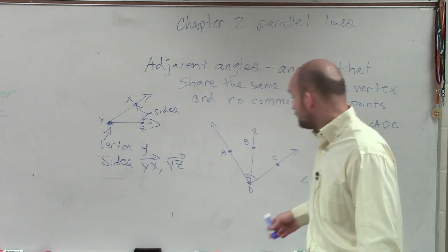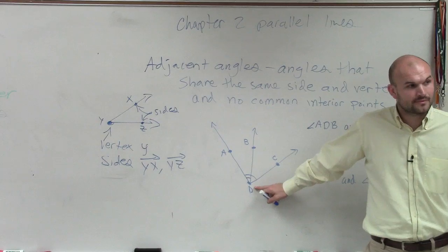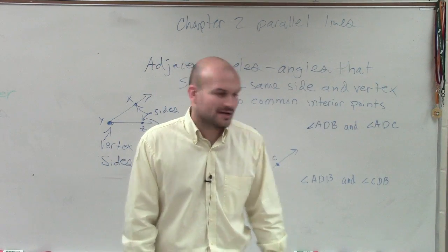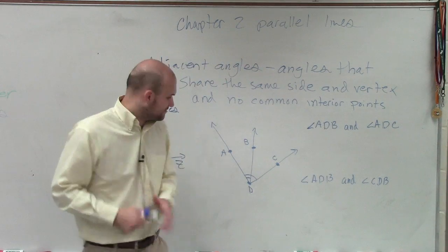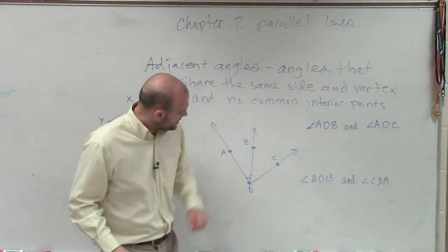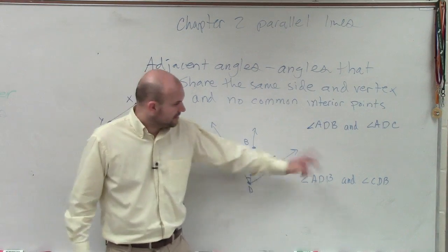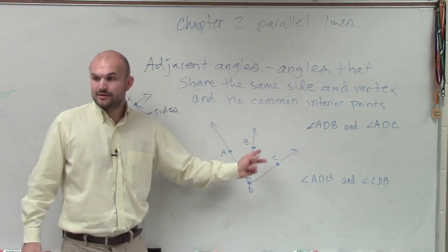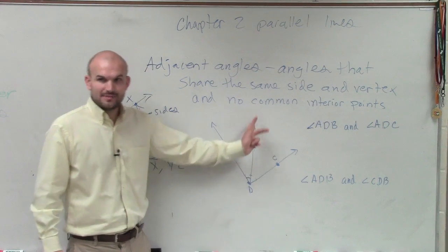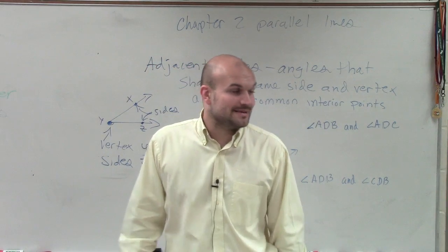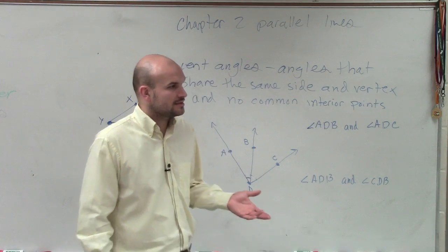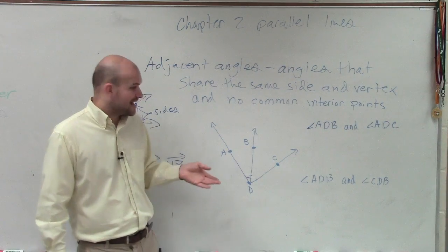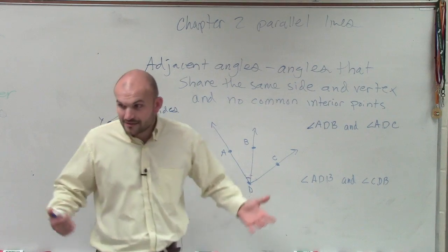And do they share the vertex? Do they have the same vertex? So that's a possibility, right? Let's go and take a look at the other two angles. So these two share a side and share a vertex. Now, let's look at the angle ADB and CDB. What do ADB and CDB, do they share a vertex? Yes. Which vertex? D. Do they share a side? Yes. Which side? DB. Very good.